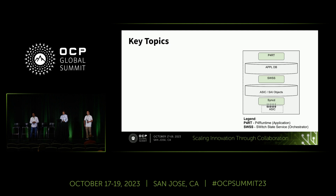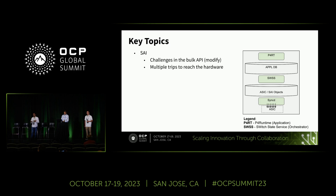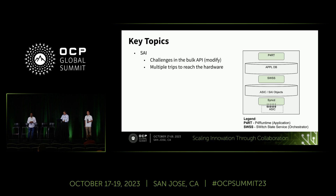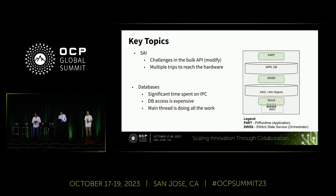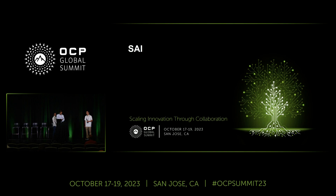We'll start with Kishore going deep into one of the SAI APIs where we had challenges, both with respect to feature completeness and performance. Kishore will cover what changes we made and how we solved that problem, including bulk variants proposed upstream. Then Ranming will go over challenges in the upper layers — particularly the time spent in IPC, DB access, and how the single-threaded synchronous design contributes to delay. I'll hand it over to Kishore to cover the SAI side.